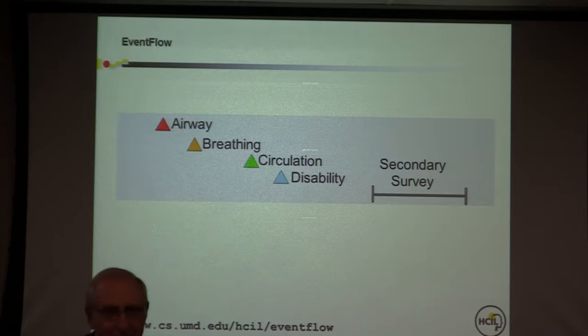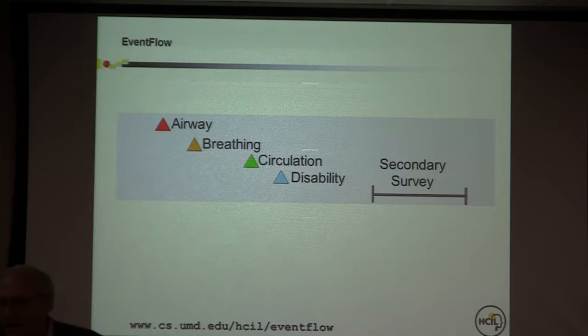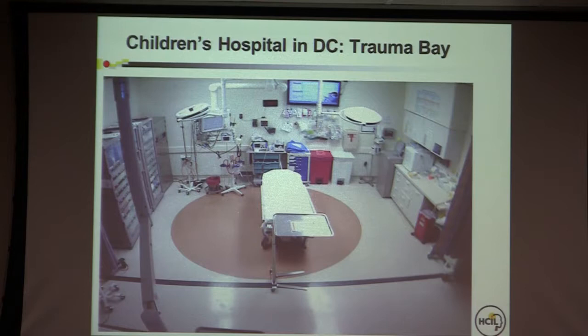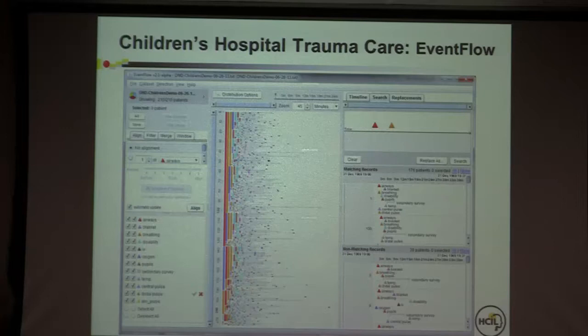You get two minutes to do ABCD, then seven minutes to do the secondary survey: roll the patient over, take off the clothes, check for bruises, wounds, burns, rashes, cuts, et cetera. The question the manager was asking was how often do they get this right? They set up a video camera in the emergency room, videotaped it, and had someone timestamp when these things happened. And they gave us a timeline with those timestamps. Looking at the data in the tool, it's kind of easy.